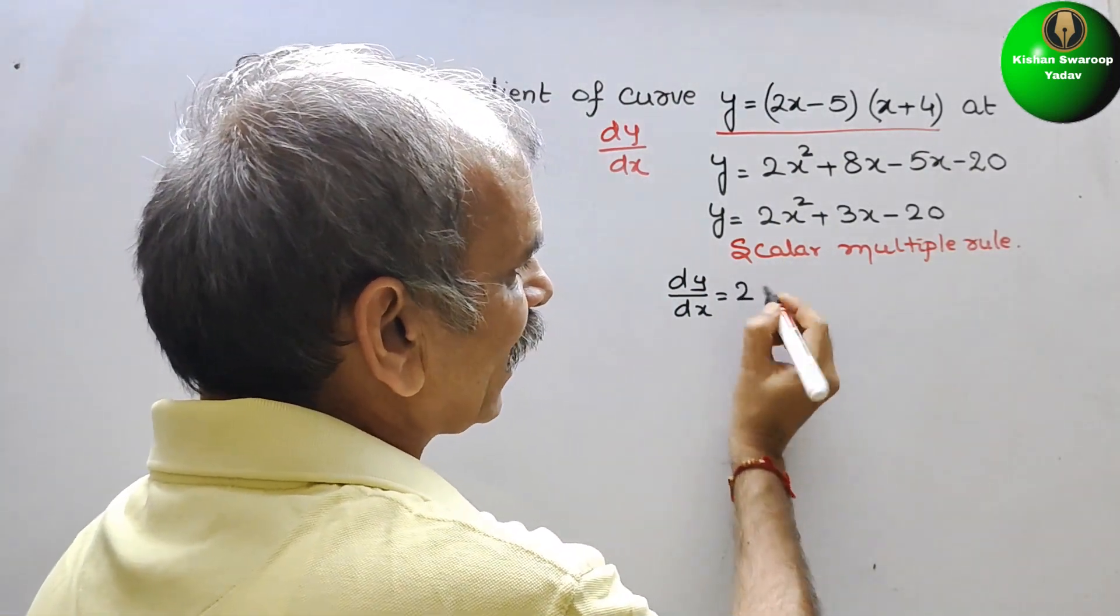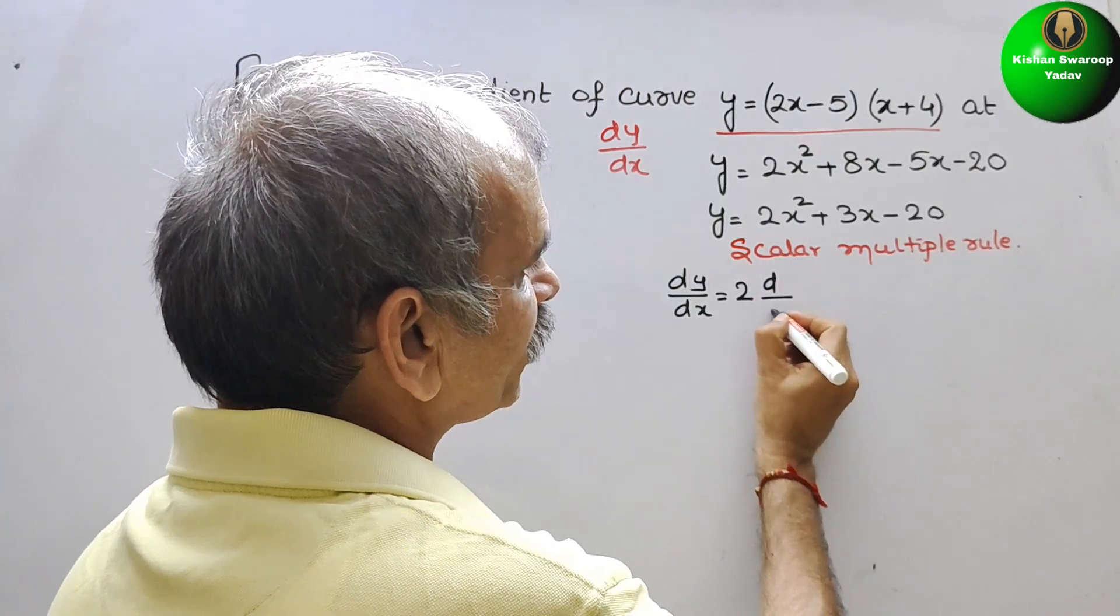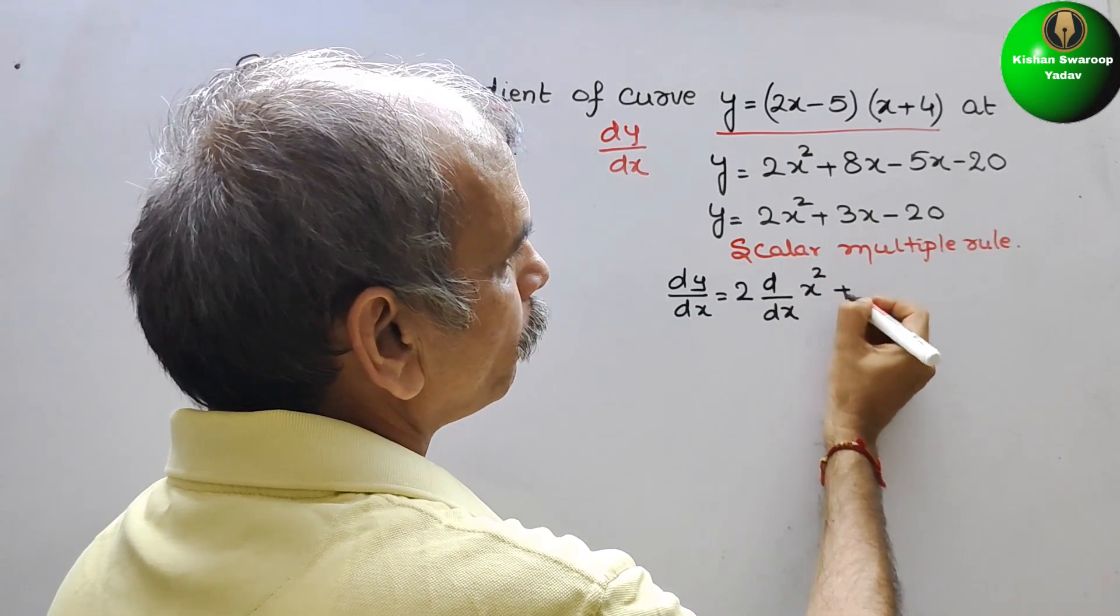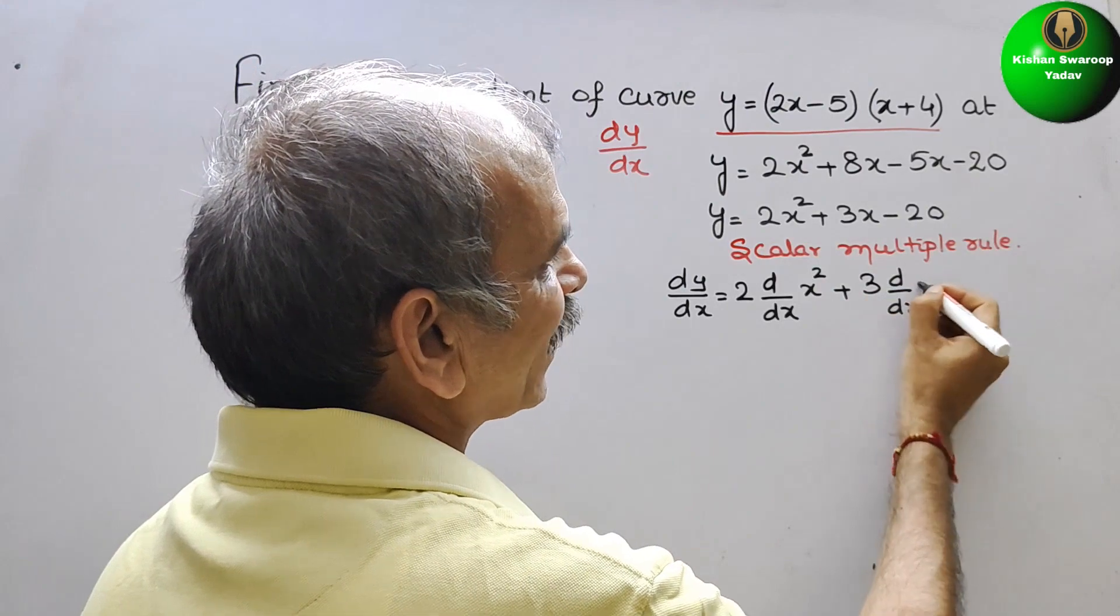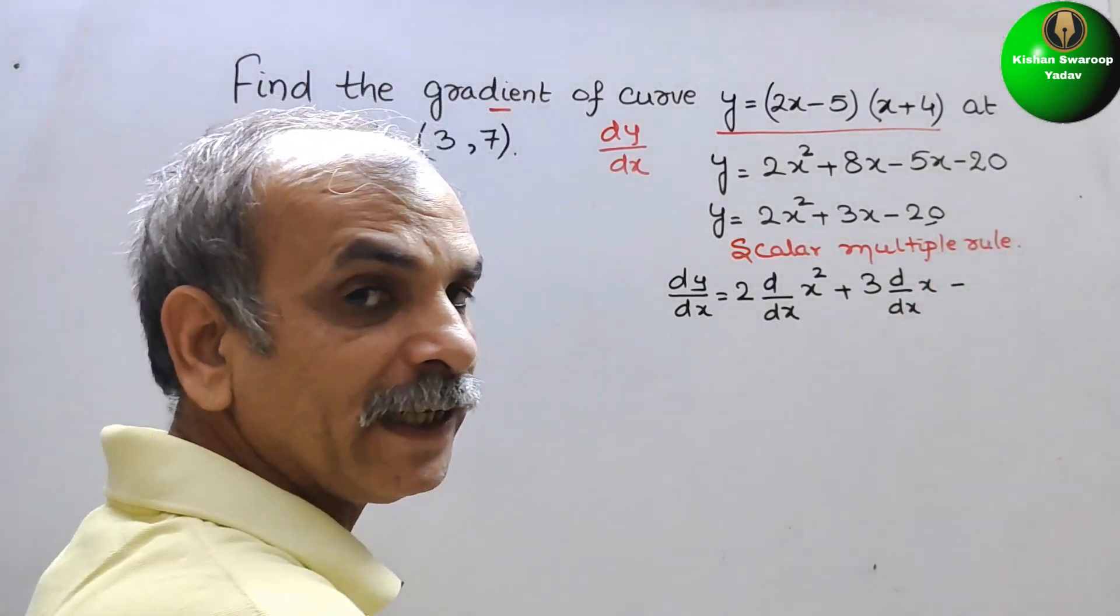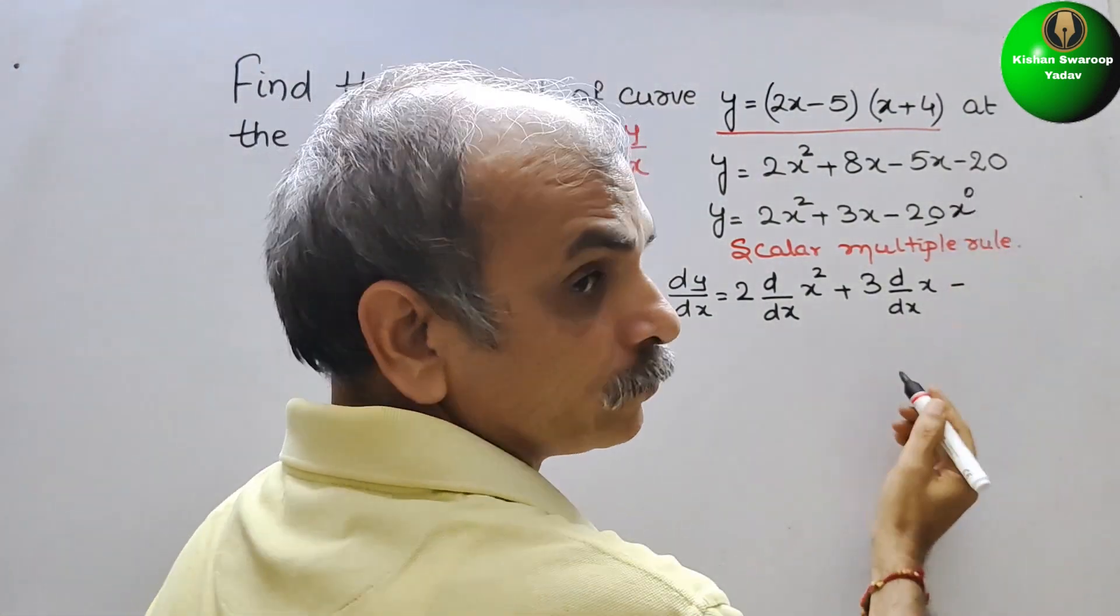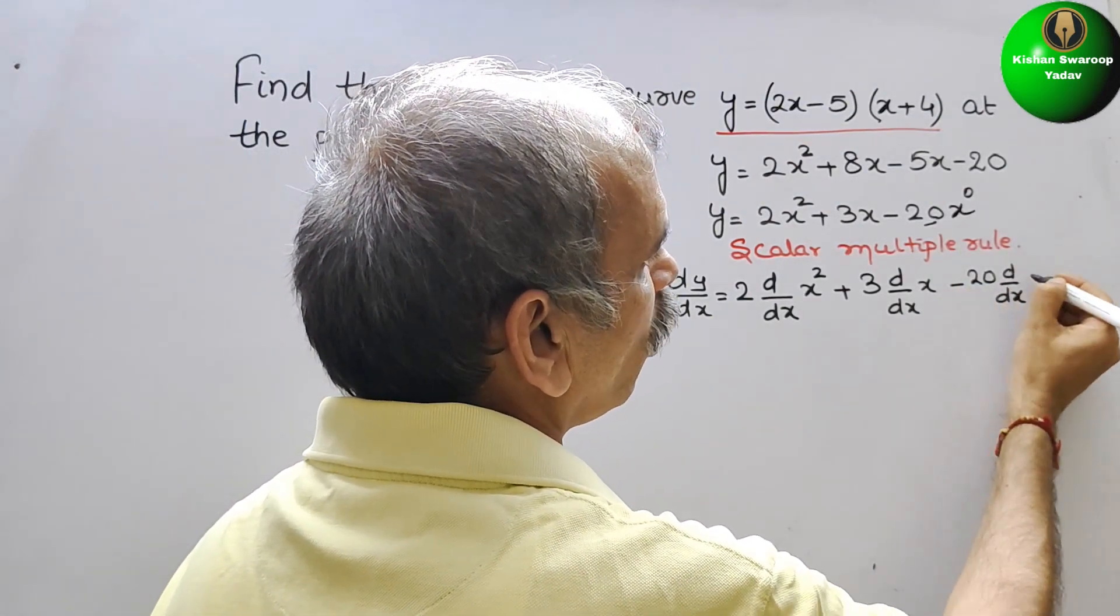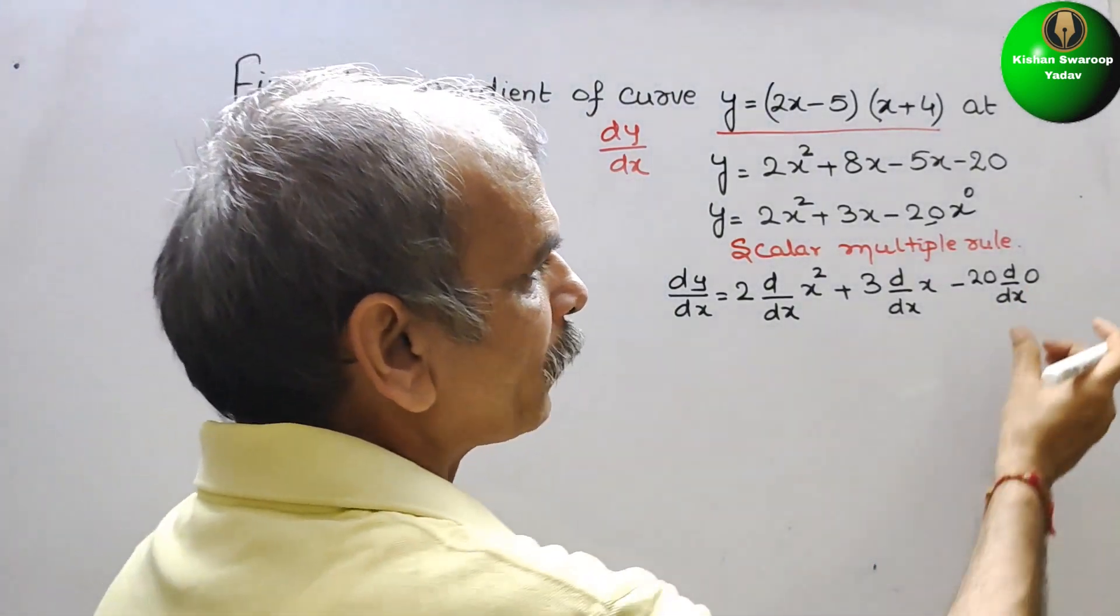And next we have to differentiate that is d by dx of x square plus 3 d by dx of x minus and this 20 is there. That means here we will write it as x to the power of 0. So it will be minus 20 d by dx of x to the power of 0.